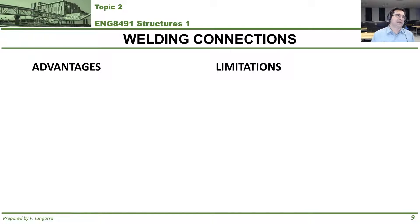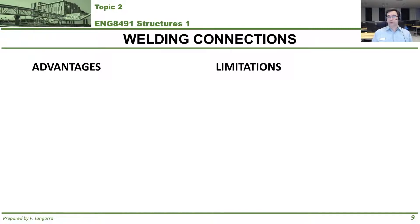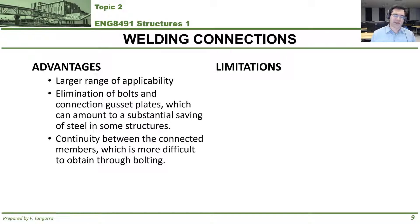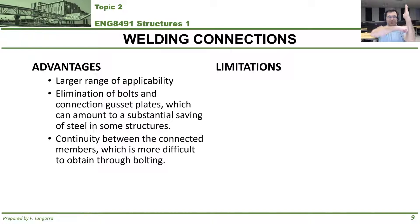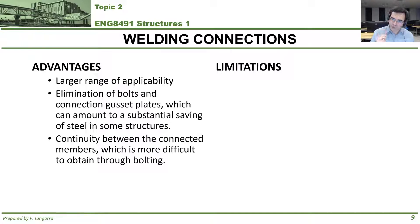Let's look at welds versus bolted connections — the advantages of each. Starting with welding: there's a much larger range of application. You can weld two elements together that cannot be bolted, for example when connecting a beam to an HSS column. Also, with welds you don't need gusset plates — if you're bolting, you can't just overlap elements directly; you need plates at the ends that overlap and get bolted. With welds you simply take two elements and weld them together. Furthermore, welds, when done properly, typically transfer forces between connected elements better than bolting.